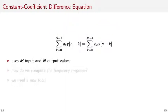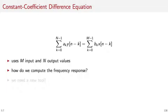This equation uses capital N input and capital N output samples — these are the limits of the summations. The question is: given this relationship, how do we compute the frequency response of the system? One way is to compute the impulse response explicitly and then take the Fourier transform, but for complex systems this would become quickly unwieldy. So we need a new tool, and that tool goes under the name of the Z-Transform.